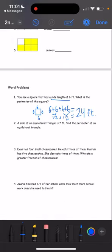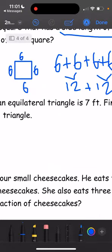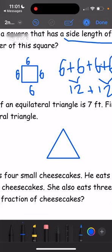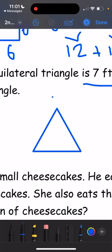Number 2. A side of an equilateral triangle is 7 feet. Find the perimeter of an equilateral triangle. Alright, so first let's draw an equilateral triangle. An equilateral triangle is a triangle that has 3 sides. And all 3 sides are the same length already. So all 3 sides are 7 feet, because they're all equal. It's called an equilateral triangle.